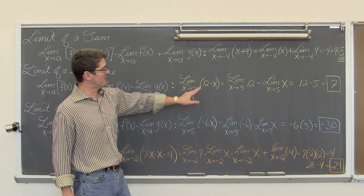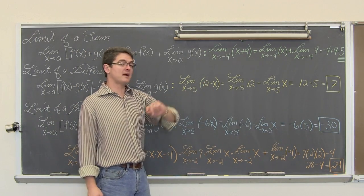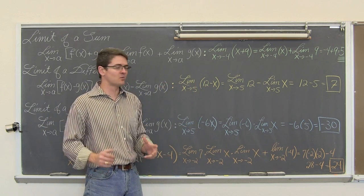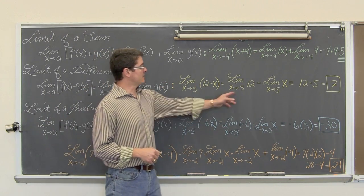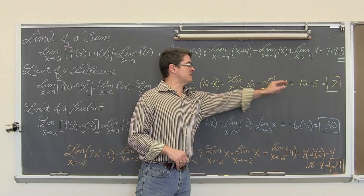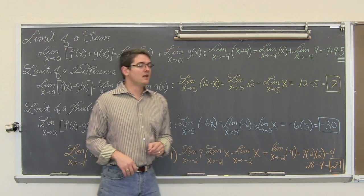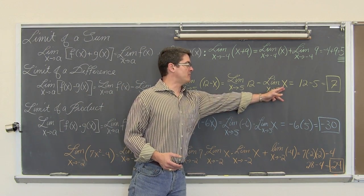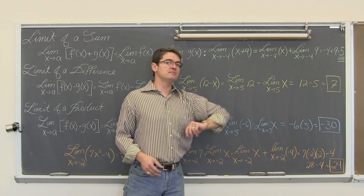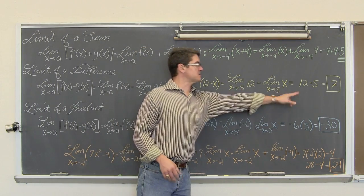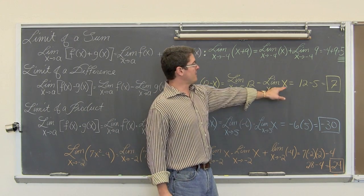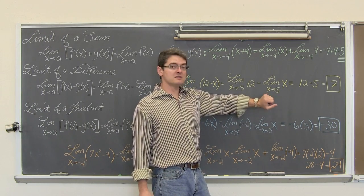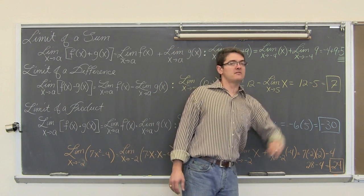The limit as x approaches five of twelve minus x — again a binomial — is the limit of the first term minus the limit of the second term. Twelve is a constant, and x is the identity function when separated. The limit of a constant is the constant itself, so that is twelve. The limit of x as x approaches five is five. And twelve minus five is equal to seven.